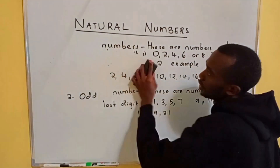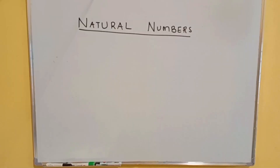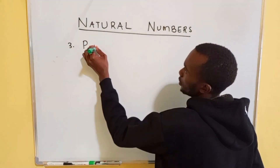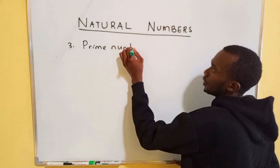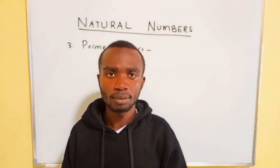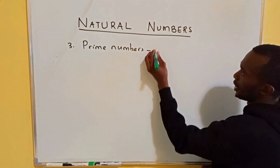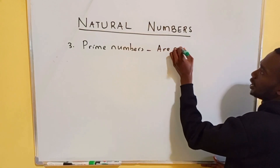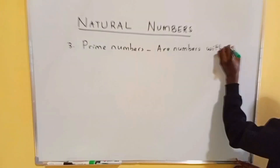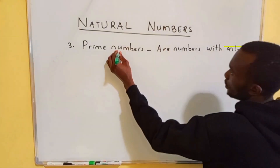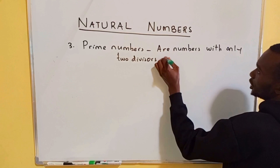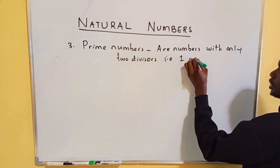Now, continuing — the third type is called prime numbers. Prime numbers are numbers with only two divisors. The two divisors can either be one or the number itself.